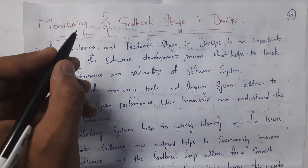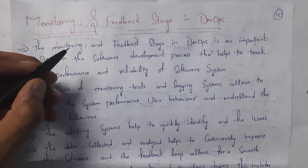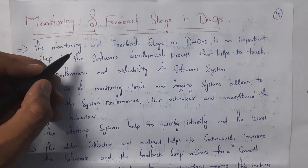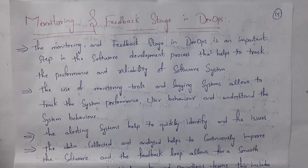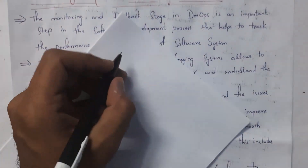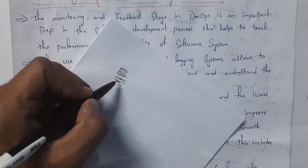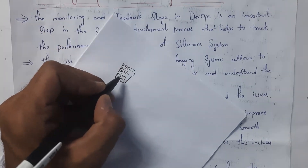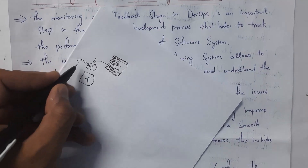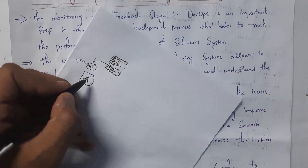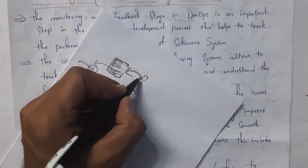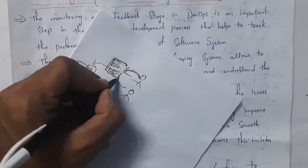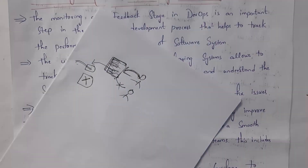Next I will explain the monitoring and feedback stage in DevOps. This is one of the most important stages in the software development process because we can track our software performance. Whenever we develop any software, there is still a chance for errors — the software will not work correctly all the time. For example, the software may work on one system but not on another, or one user can access the software while another cannot.